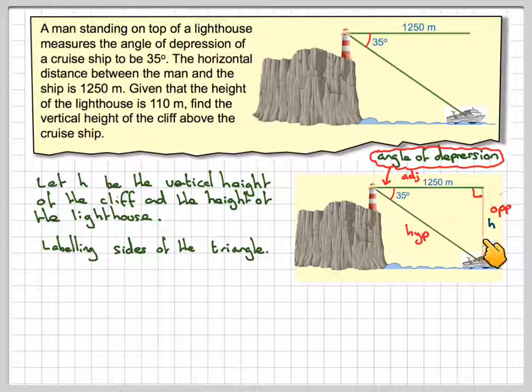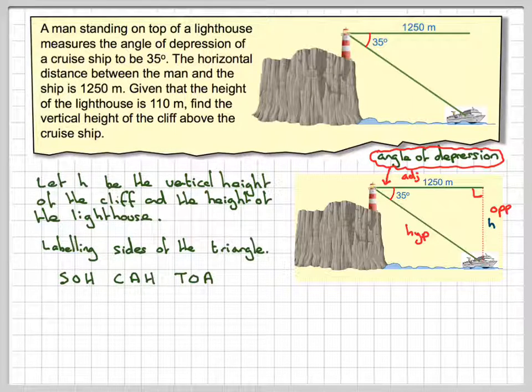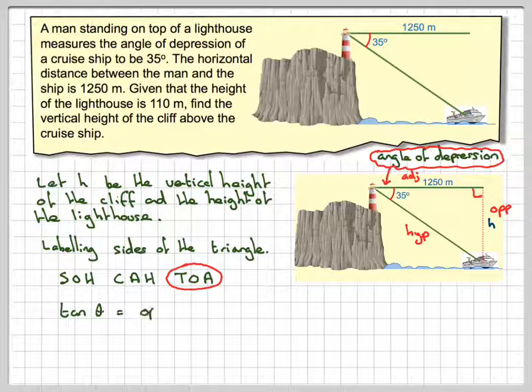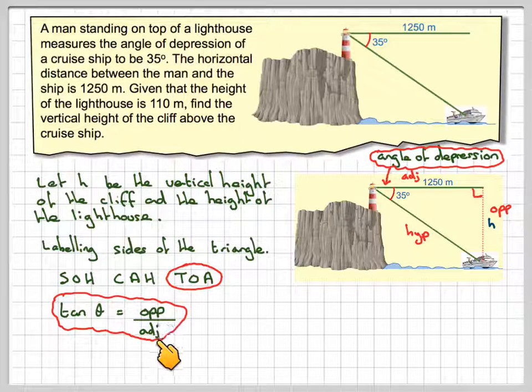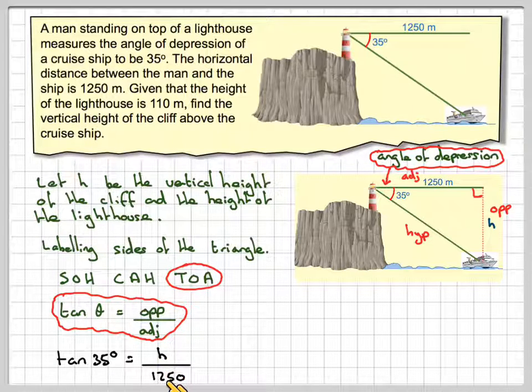We are interested in finding h. We have the adjacent. So using SOHCAHTOA, then we've got tan opposite adjacent is the one that we're going to use. Writing down the formula, tan theta is equal to opposite over adjacent. And then filling in the numbers, we have that tan 35 is going to be h over 1250.